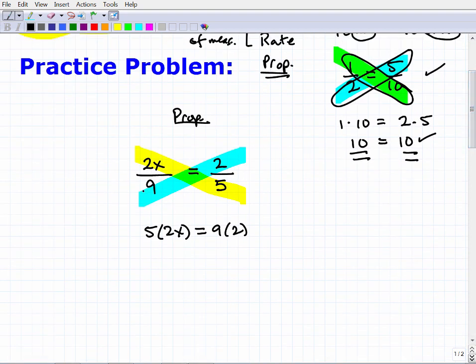So we just cleared the fractions, and we're able to do this using that property of the cross product. Once we identified that this is a proportion, we went ahead and cleared the fractions. And now we've got to solve this basic remaining equation. So 5 times 2x is 10x, equal 9 times 2 is 18. So to solve for x, I'm going to go ahead and divide both sides of the equation by 10. So x is equal to 18 over 10. But we want to always reduce our answers. So 2 goes into 18, 9, and 2 goes into 10, 5. So 9 fifths would be our answer for this proportion. And that's basically it.